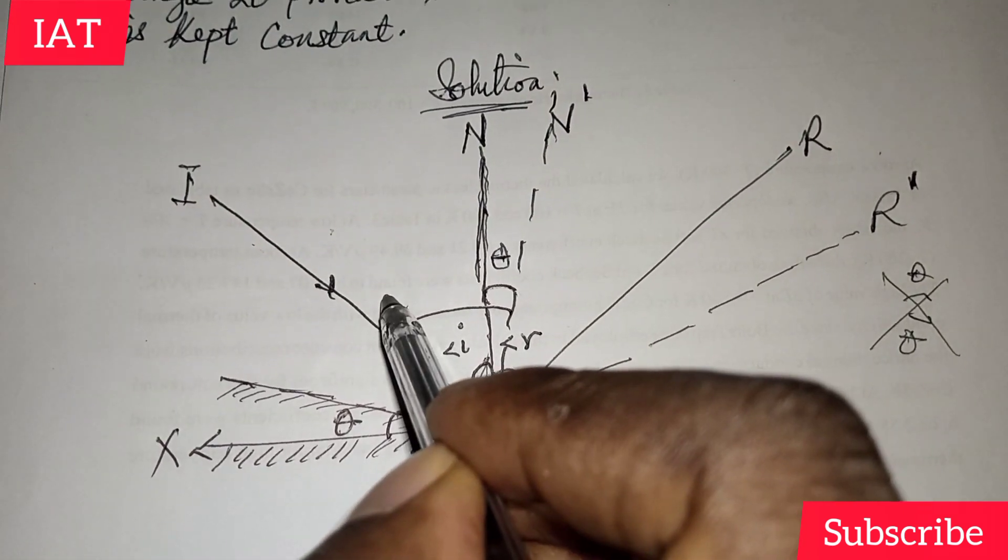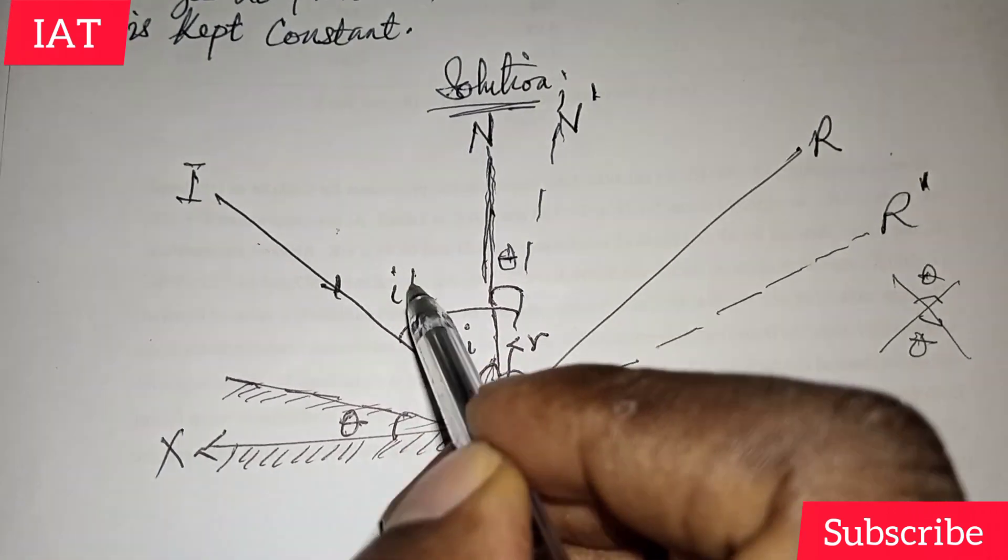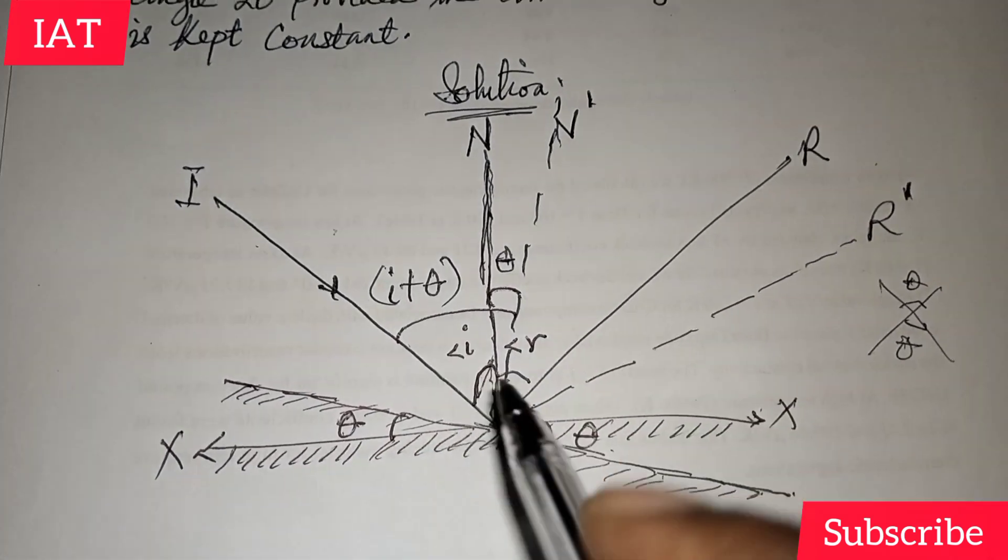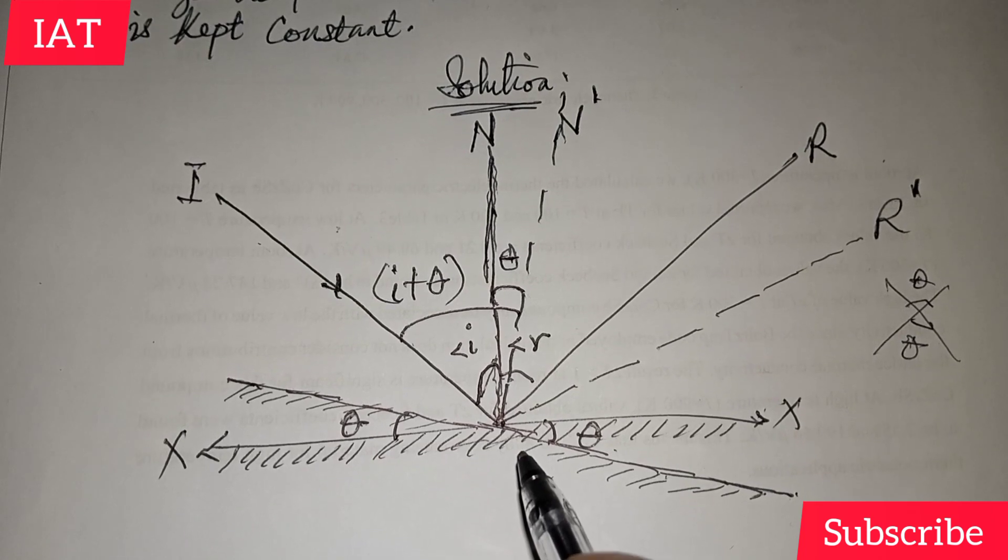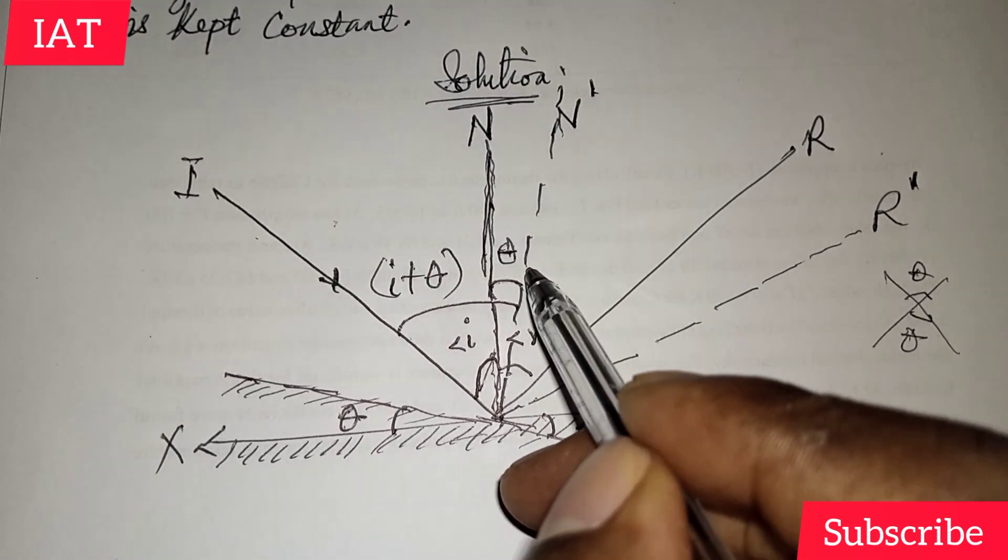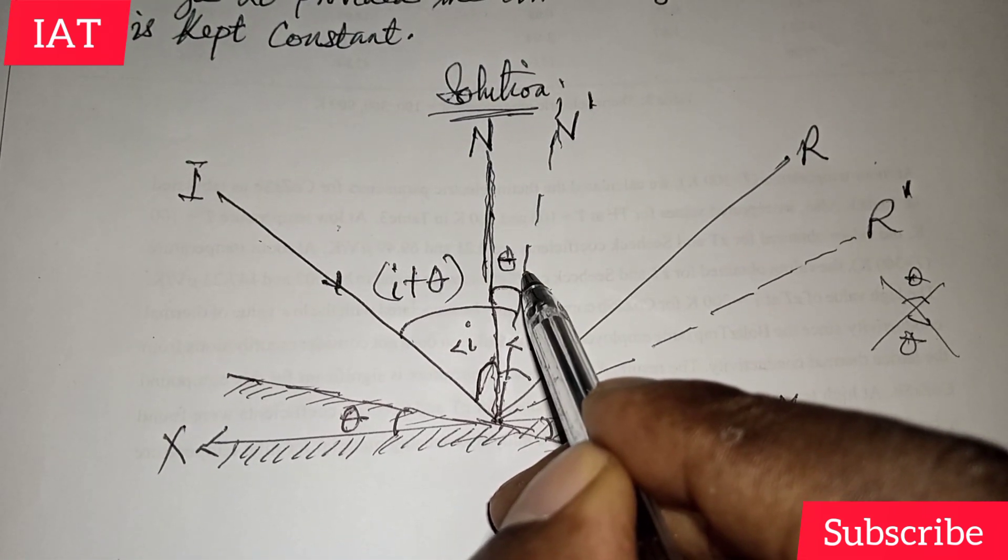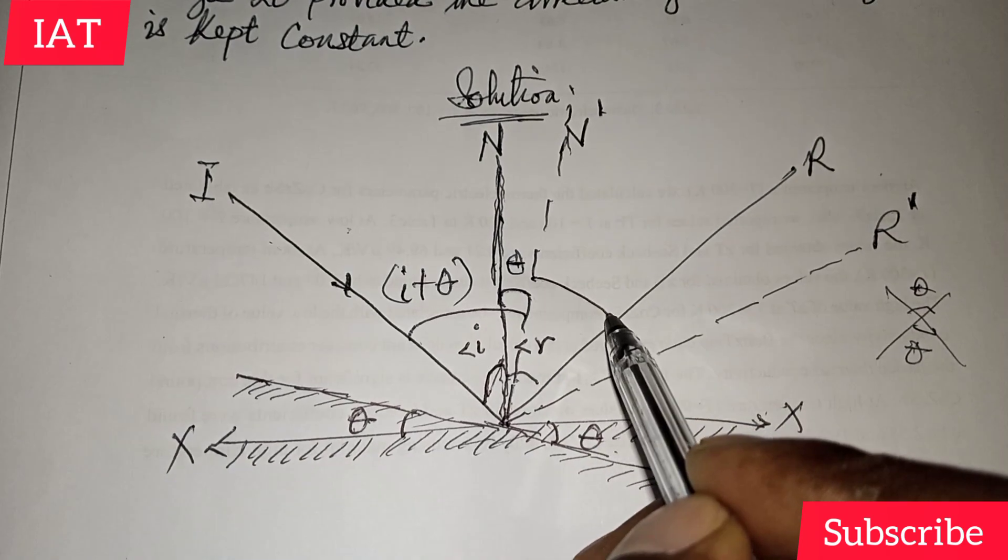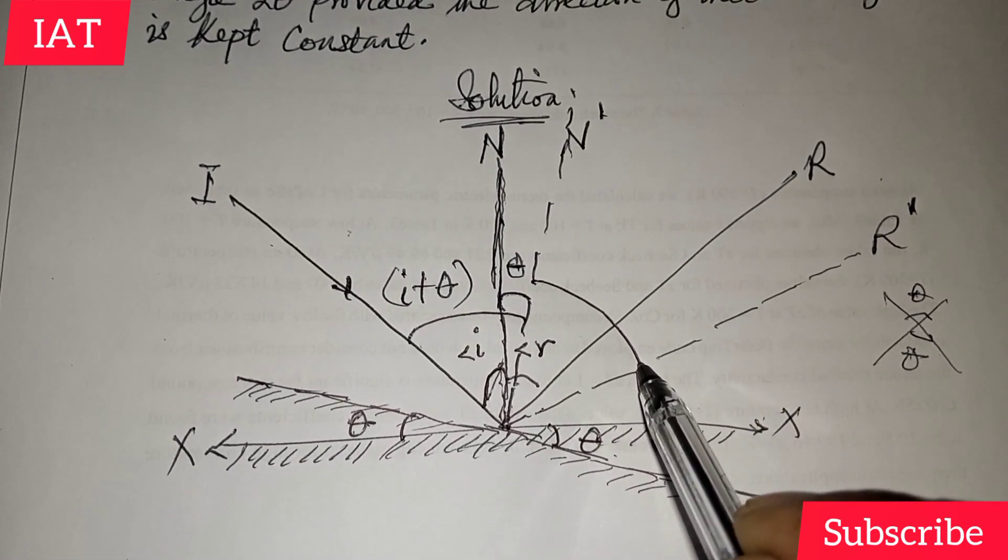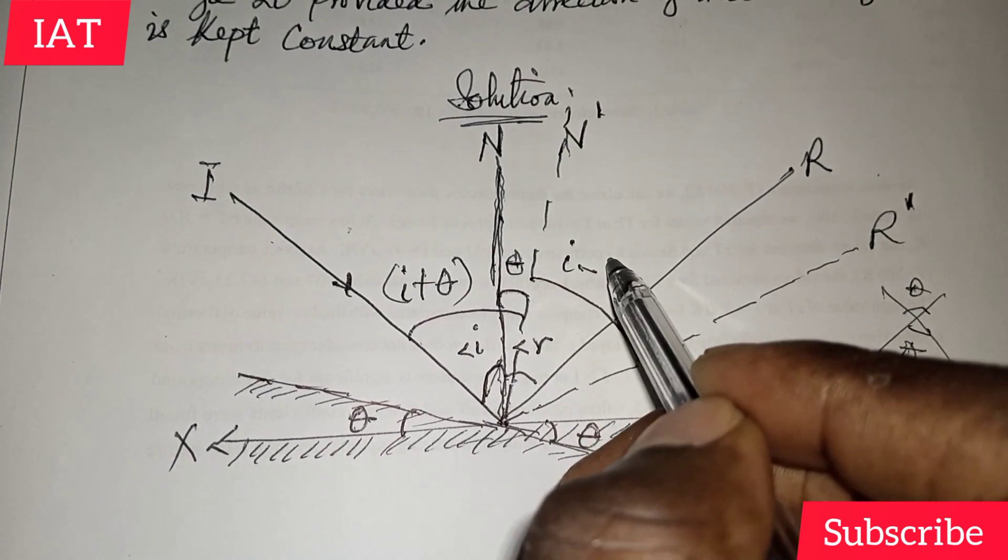this i will become i+θ. And then also from this point down to this reflected angle, here will be i-θ.